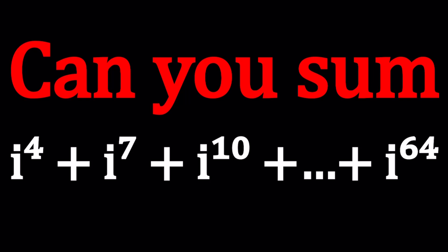We have i to the 4th plus i to the 7th plus i to the 10th, so on and so forth, all the way up to and including i to the power 64. Now, what is the rule here? When you see a problem like this, obviously you want to see a pattern. It can't just be the sum of random powers of i, and the pattern is you start with i to the 4th, and then every time you increase the exponent by 3, and then you end up with i to the power 64.